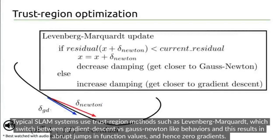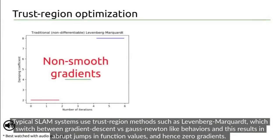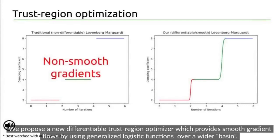Usual SLAM systems use trust region methods such as Levenberg-Marquardt, which switch between gradient descent and Gauss-Newton-like behaviors. This results in abrupt jumps in function values and non-smooth gradients. We propose a new differentiable trust region optimizer which provides smooth gradient flows by using a generalized logistic function over a wider basin.